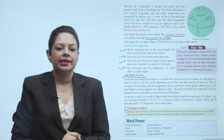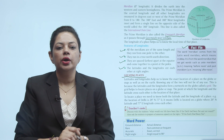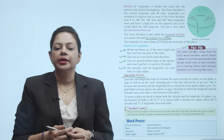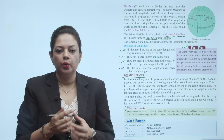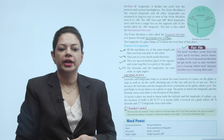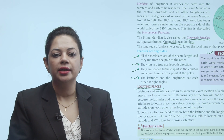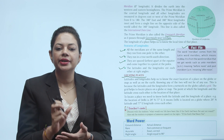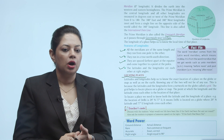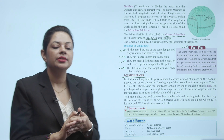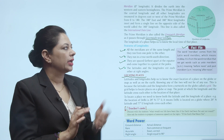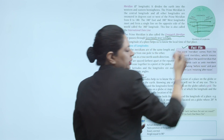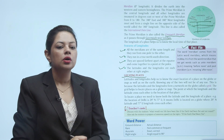Latitudes and longitudes help us to know the exact location of a place on the globe, map or Earth. Knowing only one of the two will not be of use — because latitudes and longitudes together form a network on the globe called a grid. The grid helps to locate a place. The point at which a longitude and a latitude cross each other is the location of that place. For example, the location of Delhi is 29 degree north latitude and 77 degree east longitude — where these two lines intersect, that is Delhi's location.